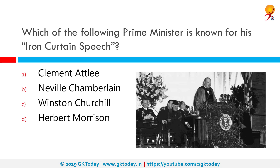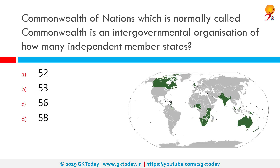Which of the following prime ministers is known for his Iron Curtain speech? That would be Winston Churchill. On March 5th, 1946, Sir Winston Churchill visited Westminster College as the Green Lecturer and delivered a message heard around the world, which went down in history as the Iron Curtain speech: 'From Stettin in the Baltic to Trieste in the Adriatic, an iron curtain has descended across the continent.'